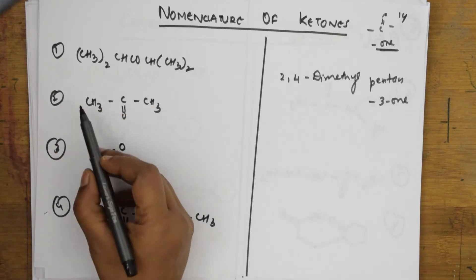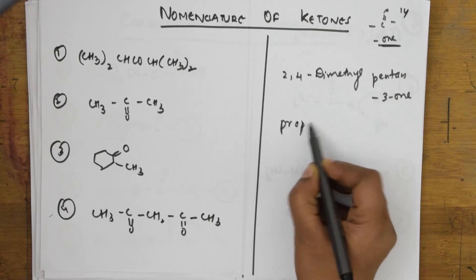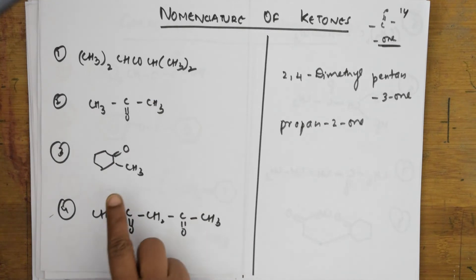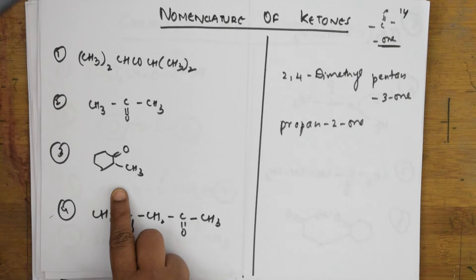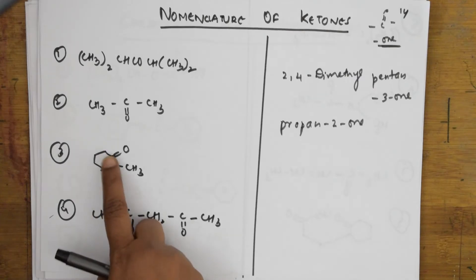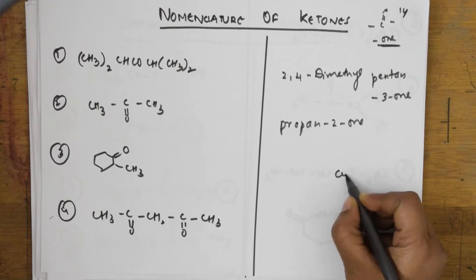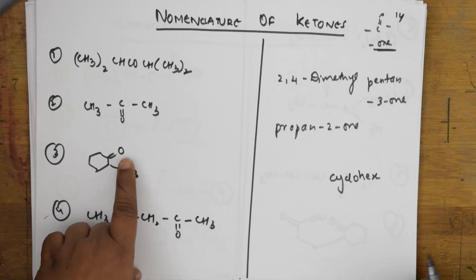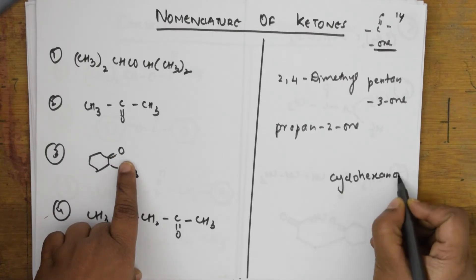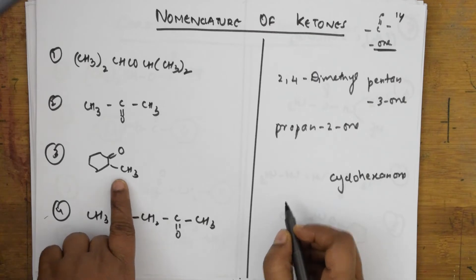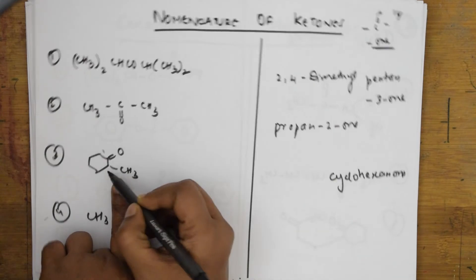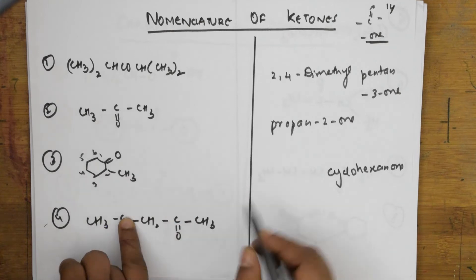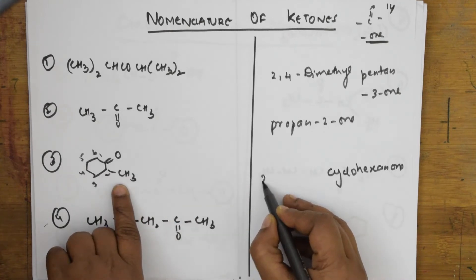This one has only three carbon atoms — one, two, three — so it is propan-2-one. Now this is a cyclo group. How many carbon atoms are there? Six — one, two, three, four, five, six. So this is cyclohexanone. But you should not forget there is a methyl group here — one, two, three, four, five, six — what position is the methyl at?